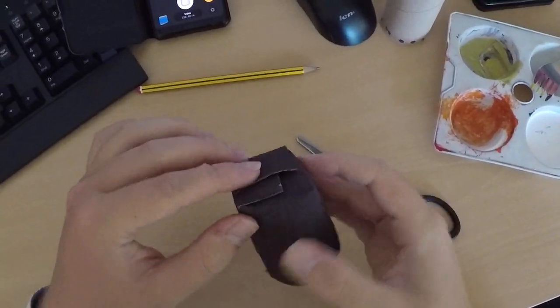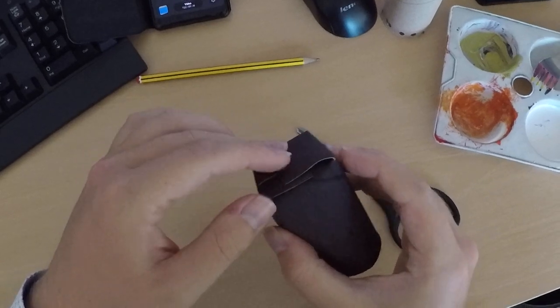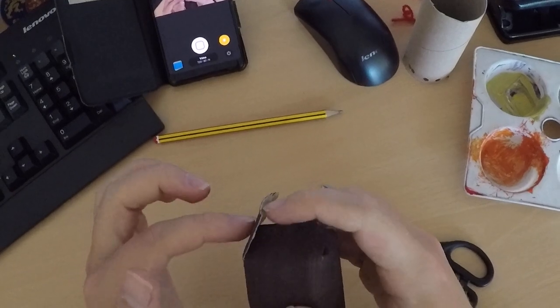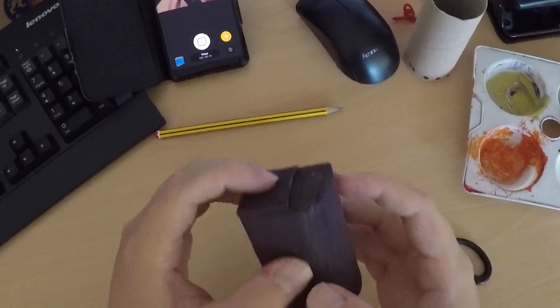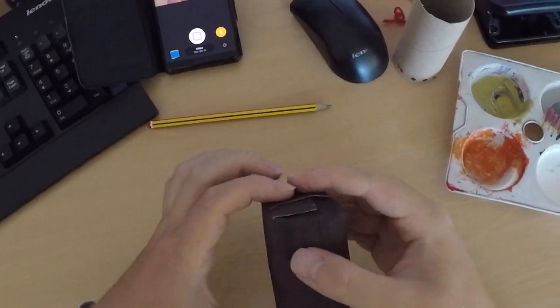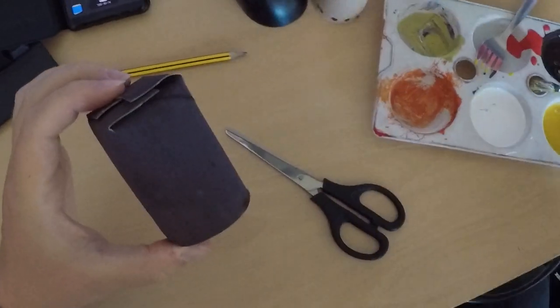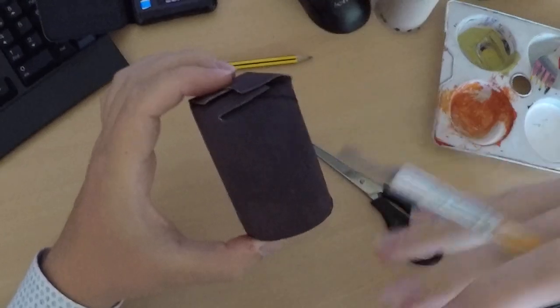You can use some PVA glue or you might have some double-sided sticky tape just to finish that top off. Then we want to decorate the rest of our body. I've got a slightly thinner brush here. I painted this with quite a thick brush because it's quite a lot of space.